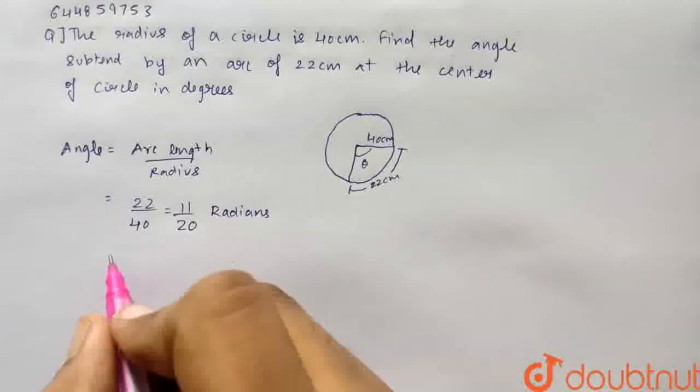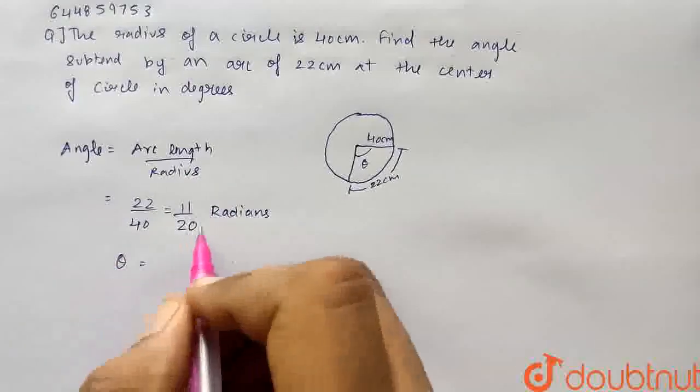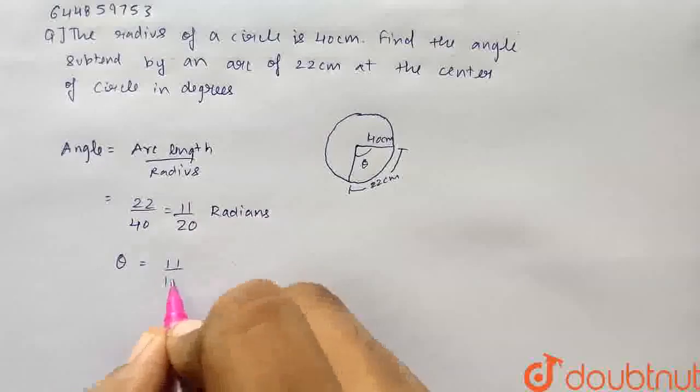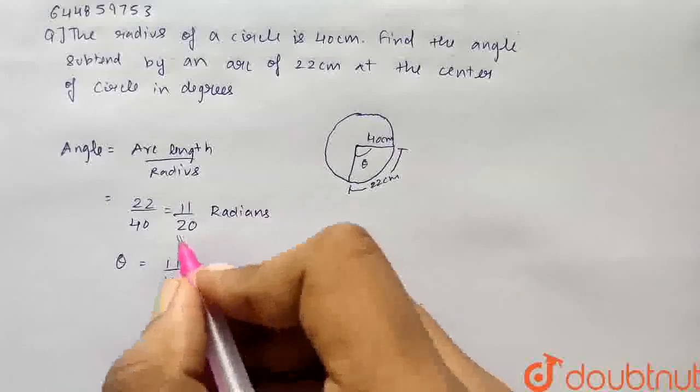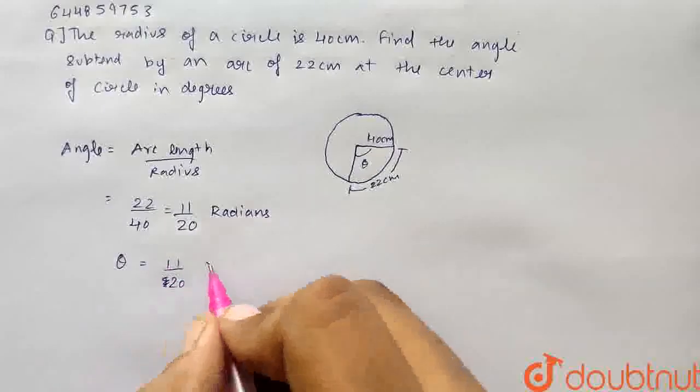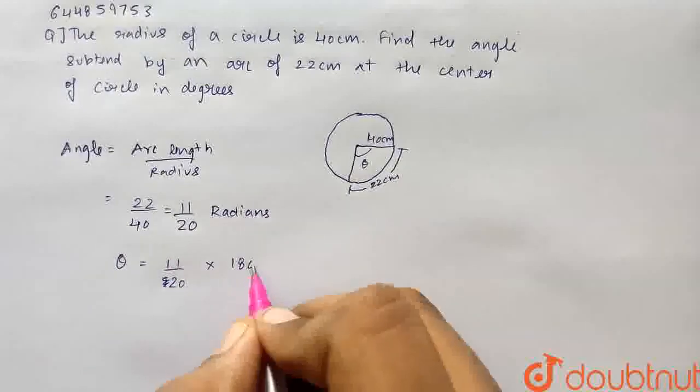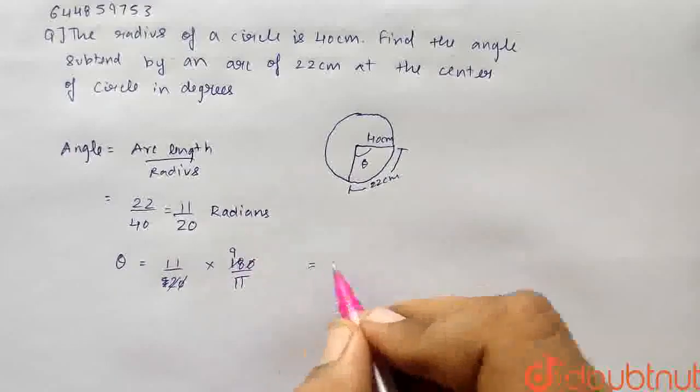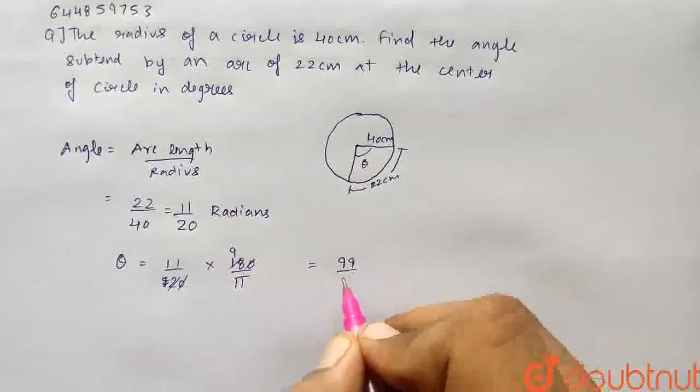We have to just convert this angle into degrees. So therefore, theta will be, to convert the radians into degrees, we will multiply by 180 by pi. So 11 upon 20 into 180 by pi. So 20 and 180 will get cancelled, and it will be 99 upon pi.